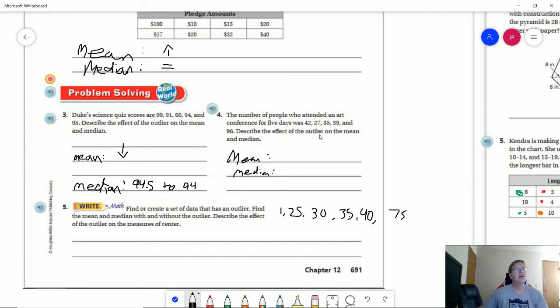Number four, the number of people who attended an art conference for five days. 96 is going to be our outlier. So that's going to be larger which is going to raise the mean.